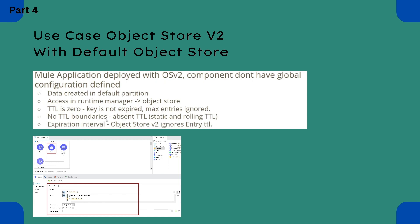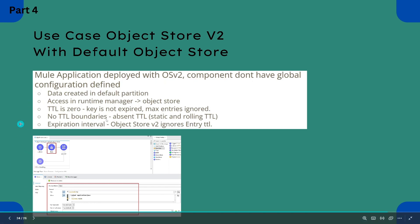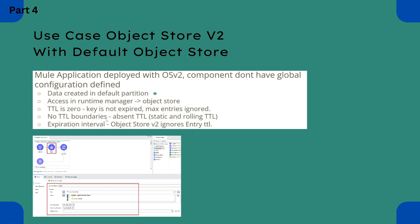If we are using a default object store, there are key points to note. The first point is that data will be created in the default partition. In the previous Part 4, we saw one custom partition was created having the same name as the object store configuration defined. In this case a default partition will be created, which I will show you once the application is deployed to Cloud App.